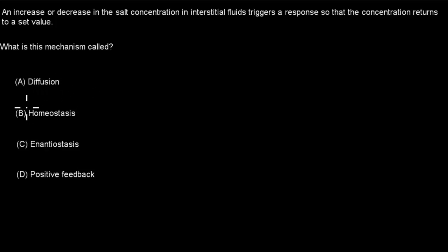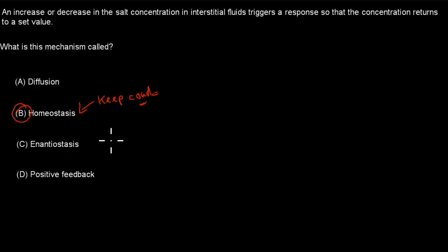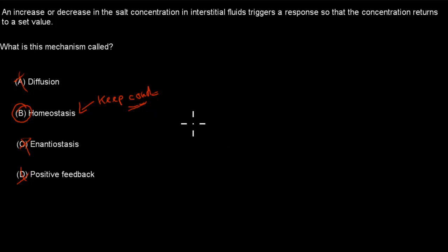The correct answer is B — homeostasis. Homeostasis is all about keeping a constant internal environment. Enantiostasis is different — there are fluctuations, but the body can cope with them rather than keeping the environment constant. Diffusion and positive feedback are simply wrong. The reason I showed you which syllabus dot points these questions come from is to remind you that when it comes to your exam, all dot points can be tested — there's no single most important dot point. Make sure you know all your dot points. Hope that was useful.